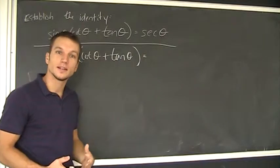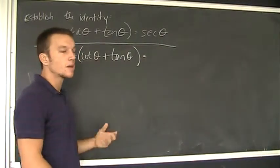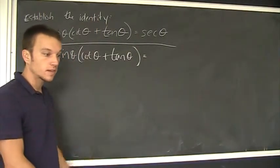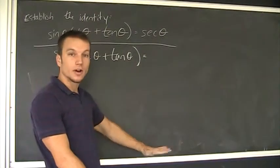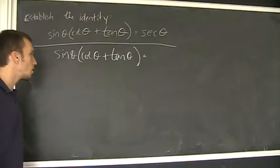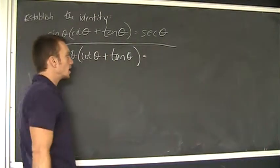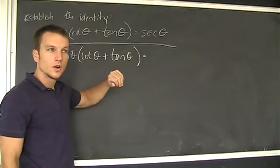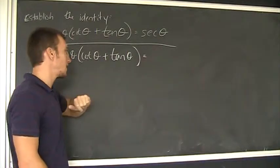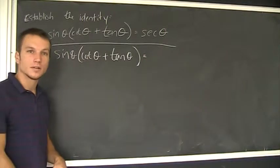You have to be familiar with your identities. In particular here, your quotient identities and maybe reciprocal identities. I don't have any Pythagorean identities — nothing squared — so I can't really do anything with that yet. Maybe later on I'll end up with something squared and I can work on that. But first things first: as you do a lot of these, a lot of times you're going to replace tangent with its definition — its quotient identity — that is sine theta over cosine theta.